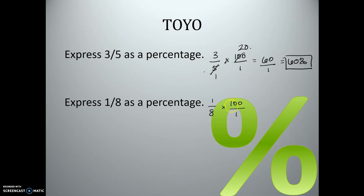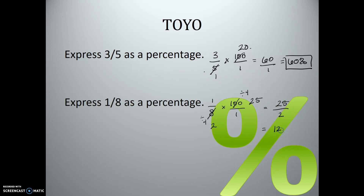For 1 over 8 times 100 over 1, divide the denominator and numerator by 4: we get 25 on top and 2 on the bottom. So we have 25 over 2, which equals 12.5 — and that's our percentage: 12.5%.